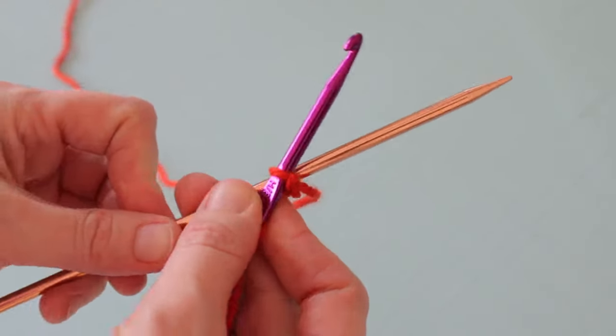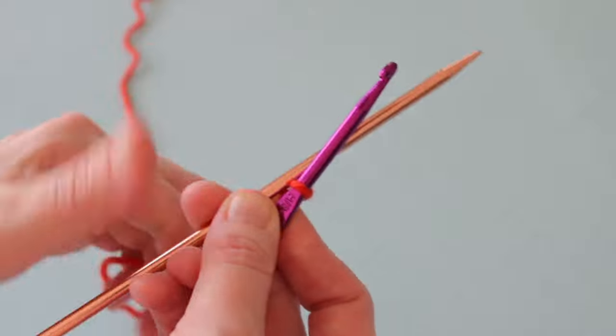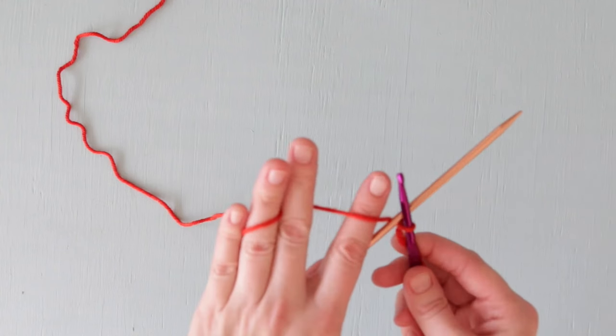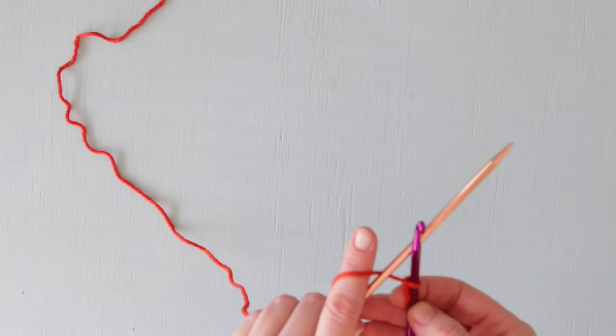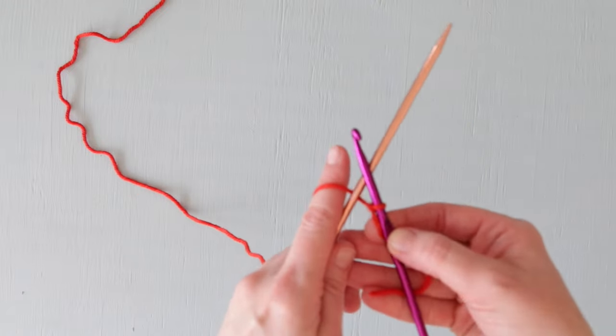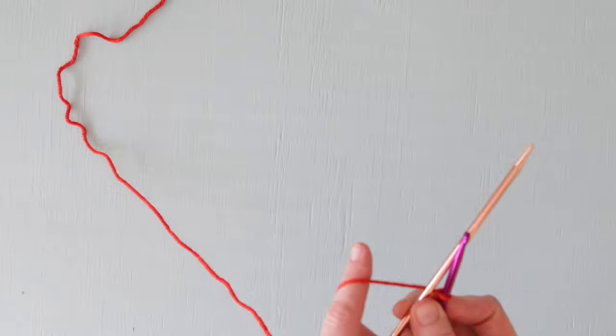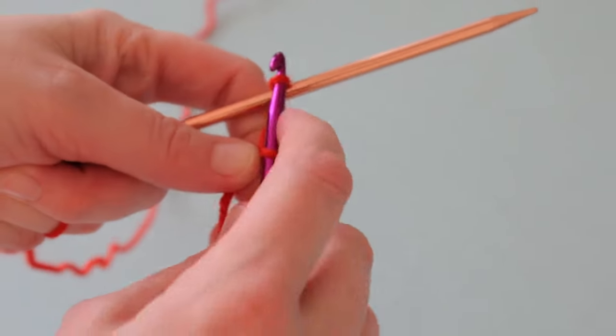I knit continental style so I kind of just reflexively tension my yarn in my left hand. No matter which hand you tension your yarn in, the action will be similar. So what we're going to do is, again keeping that tail out of the way and making sure we're working with the working end of our yarn.